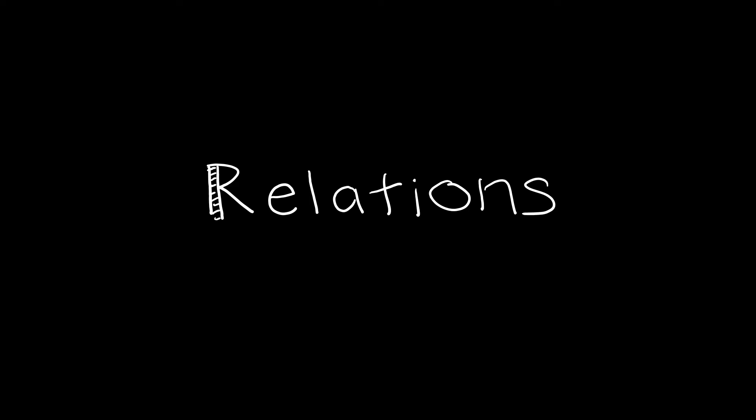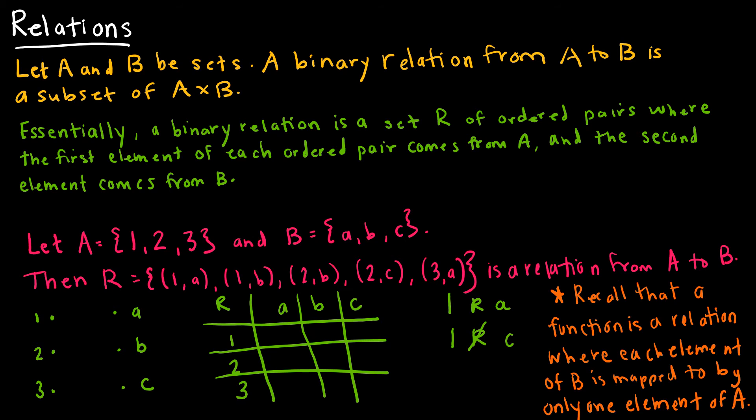In this lesson we are going to revisit relations. A relation on a set or a relation from one set to another, in this case A to B, is essentially a subset of A times B. Essentially what we're saying is we're going to have ordered pairs where the first value comes from set A and the second value comes from set B.